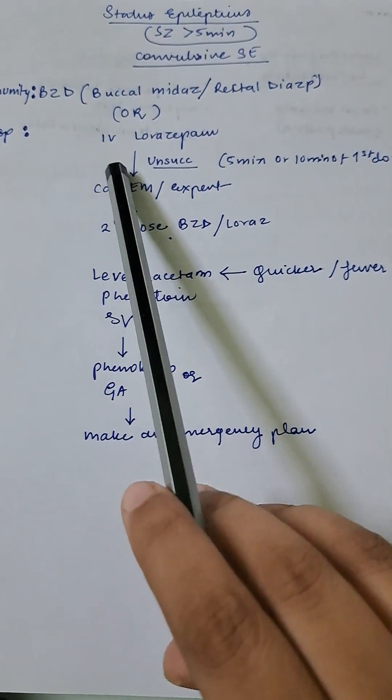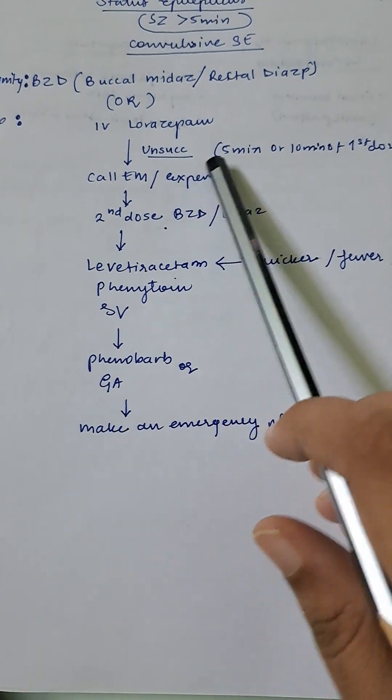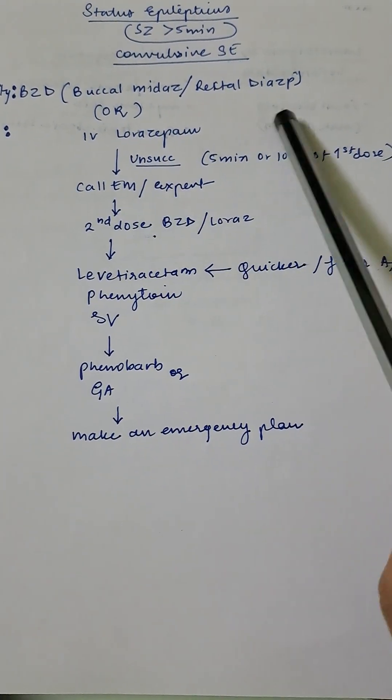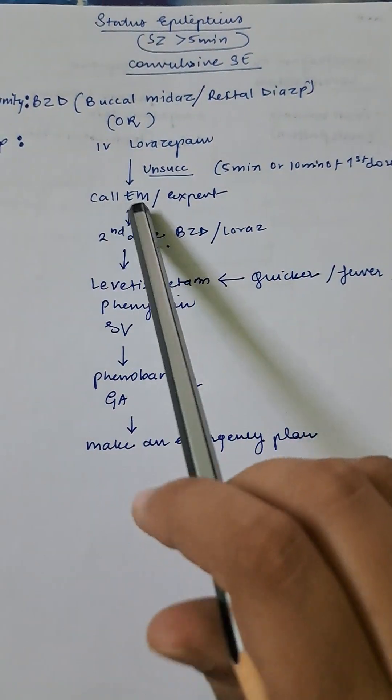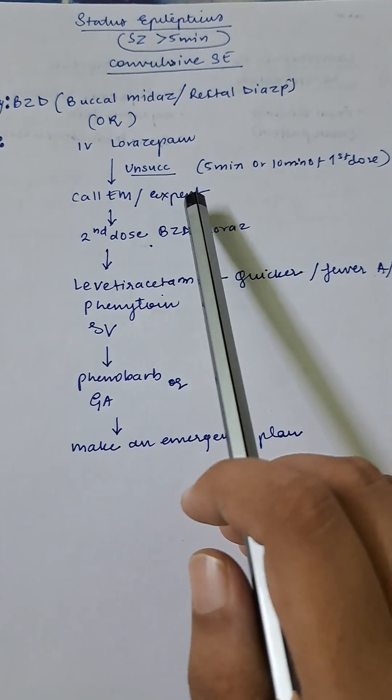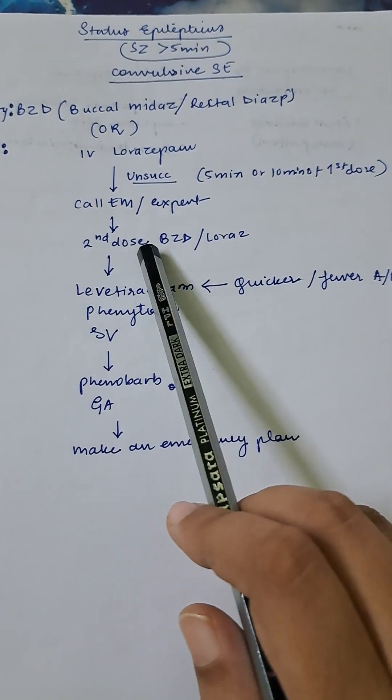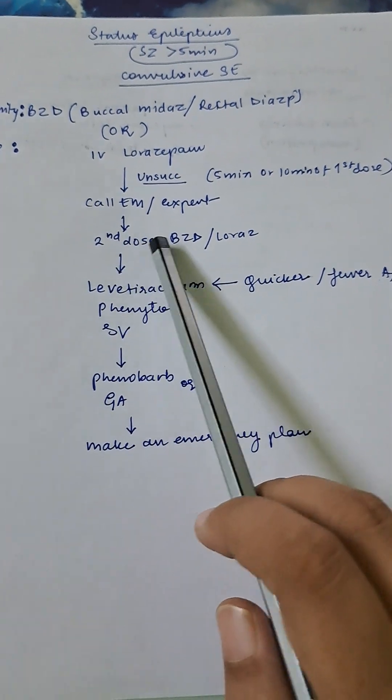If this treatment is unsuccessful, meaning if the convulsions recur after five minutes of the earlier episode or ten minutes after the first dose, then you will call the emergency department or seek expert advice and give a second dose of benzodiazepine or lorazepam.